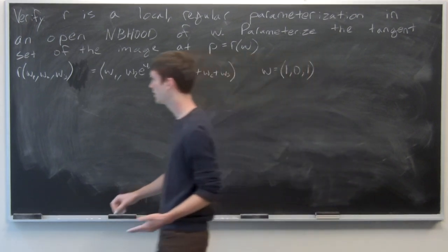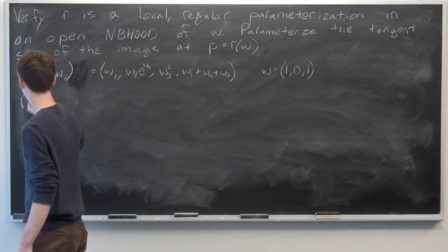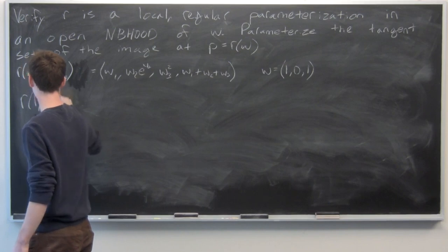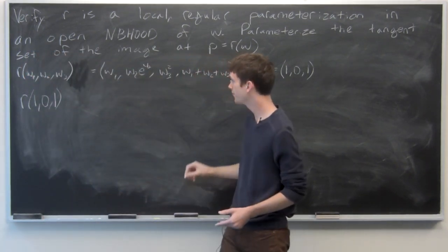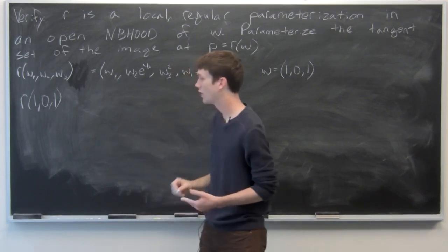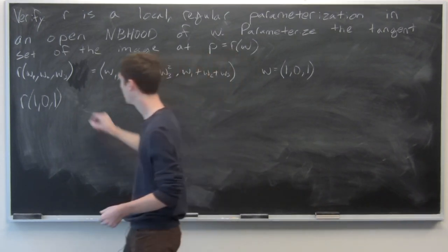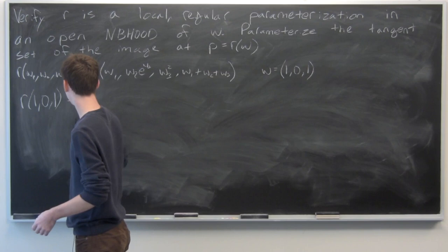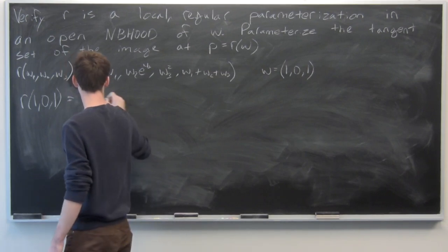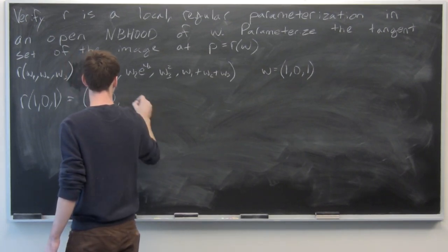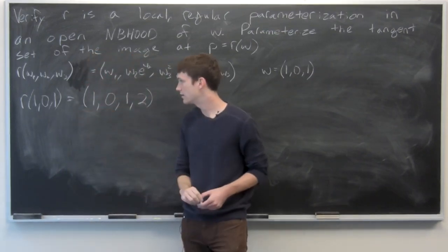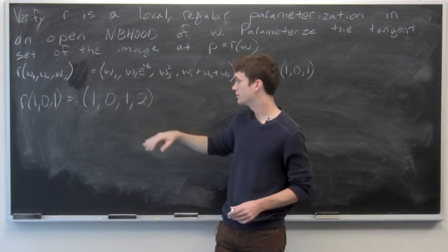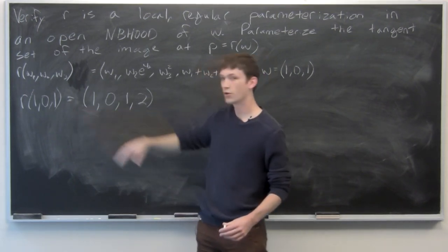So first, let's calculate r of 1, 0, 1, which is where we want to base our parameterized tangent set at. And that's the vector 1, 0, 1, 2, or the point 1, 0, 1, 2.